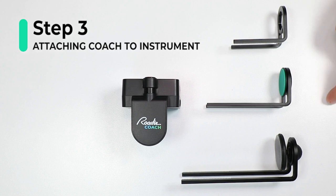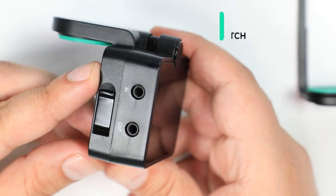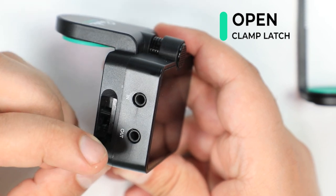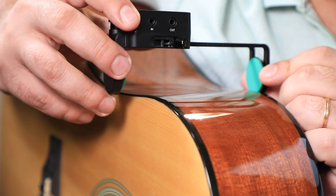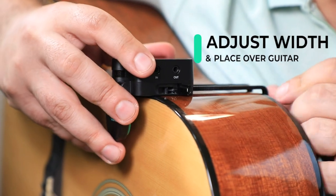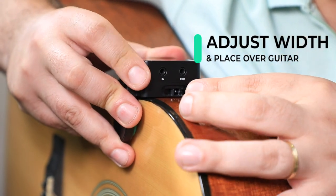Okay, let's attach Coach to our instrument. First, open the clamp latch on the side of Coach. Insert the clamp that you want to use and then position Coach over the top of your instrument. Adjust the width to match and then close the latch on the side.